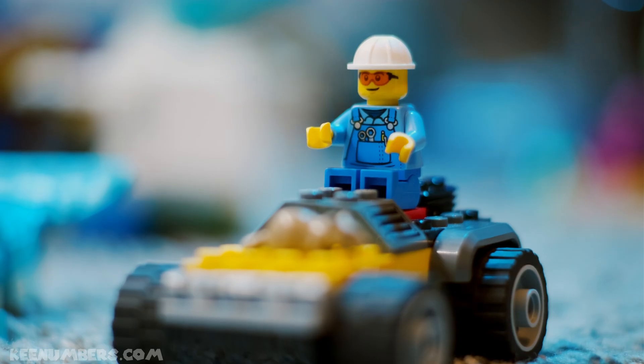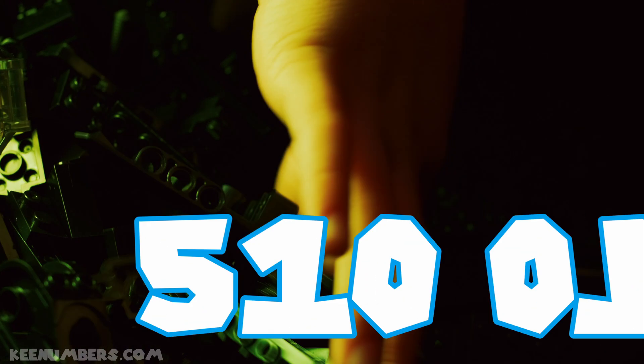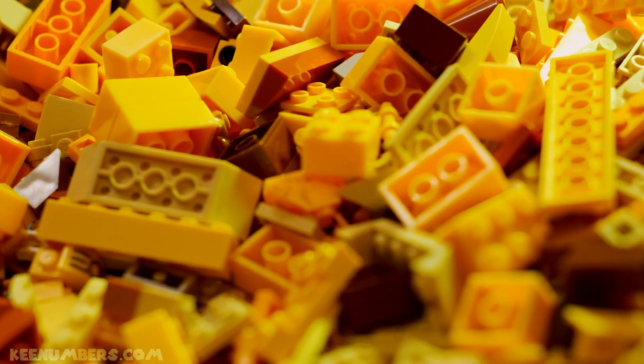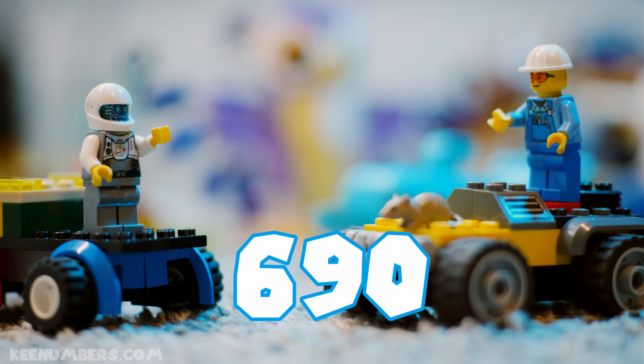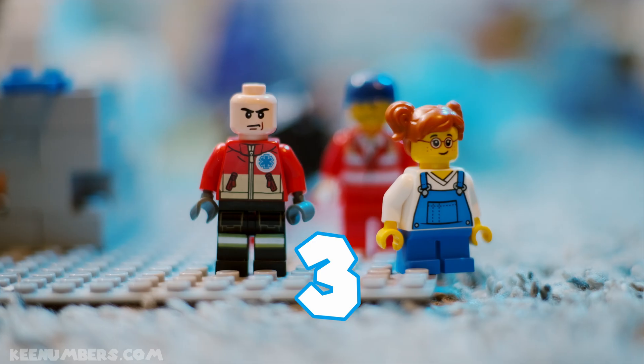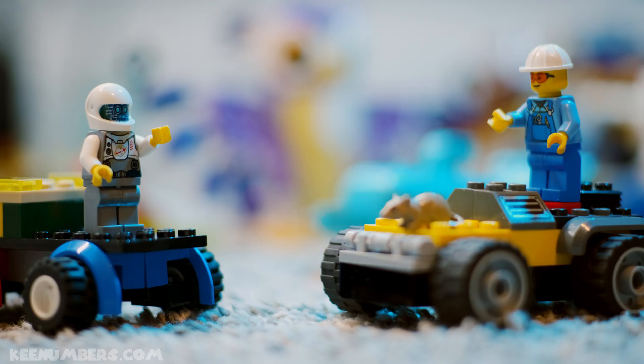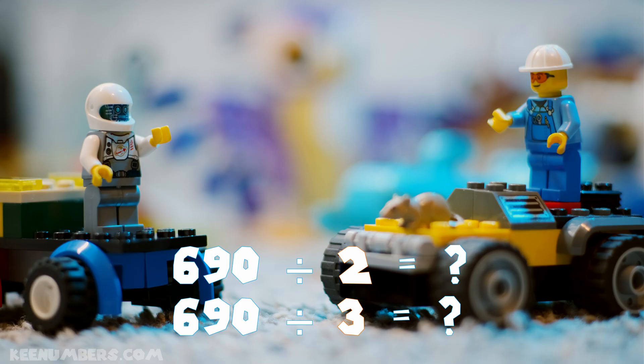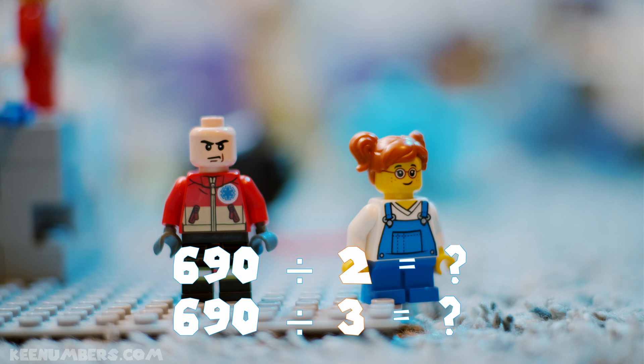So 11 friends can't get the same number of pieces because 11 does not evenly divide 510. And 690 pieces can be shared with 3 friends or just 2 friends. Because... You try! Why can 690 pieces be shared with 3 friends or just 2 friends?